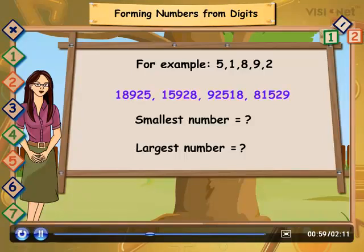Smallest number is equal to 12589. And for the largest number, we write numbers in descending order. Like this.